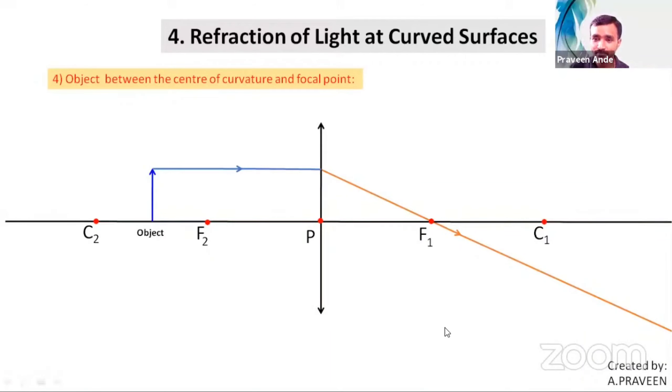What is the second ray here? Passing through the optic center of the lens. What is the behavior of this light ray after refraction? It remains undeviated.